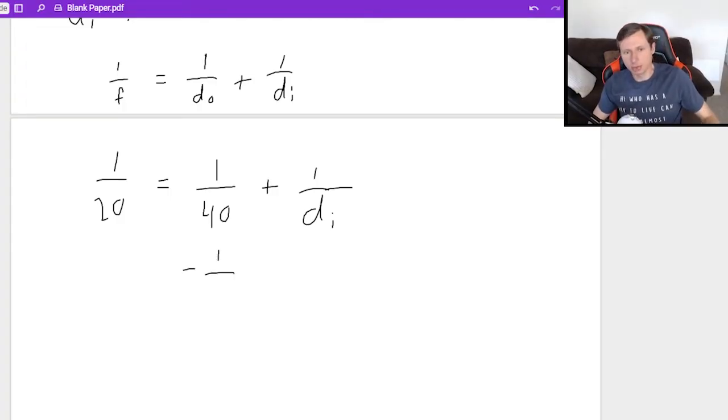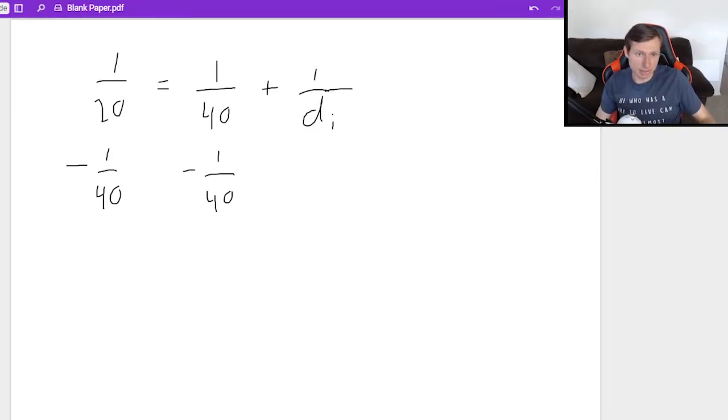The first thing I'm going to do is subtract 1 over 40 from both sides. And I'm going to plug this in my calculator, but I'm going to get a decimal. And that's fine. I am going to get on the left side, 1 over 20 minus 1 over 40, 0.025. And that's equal to 1 over DI.